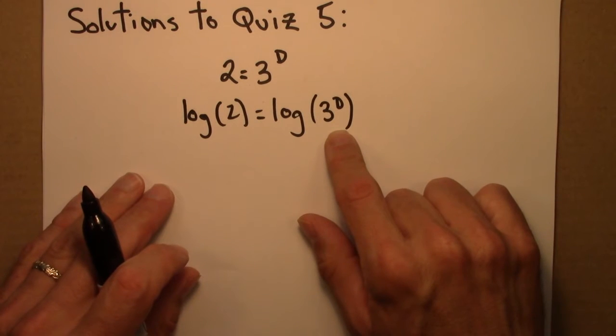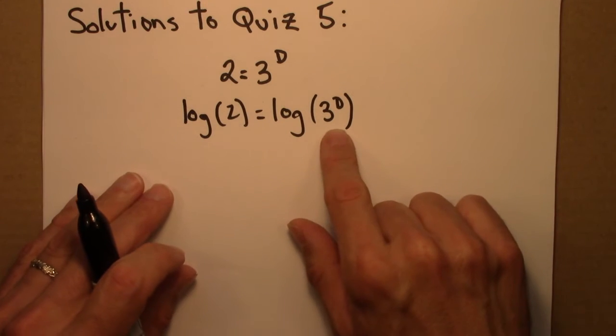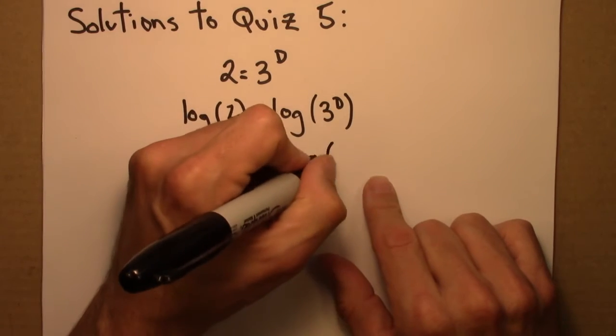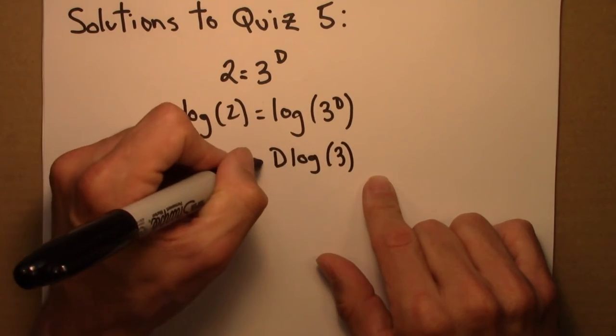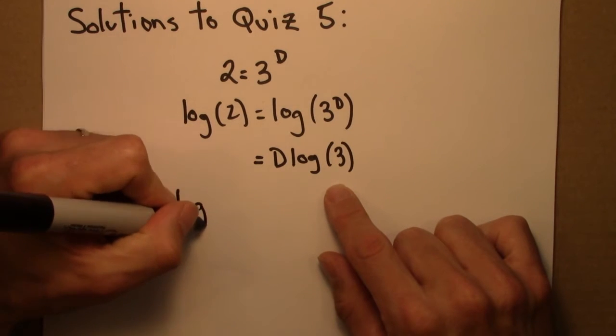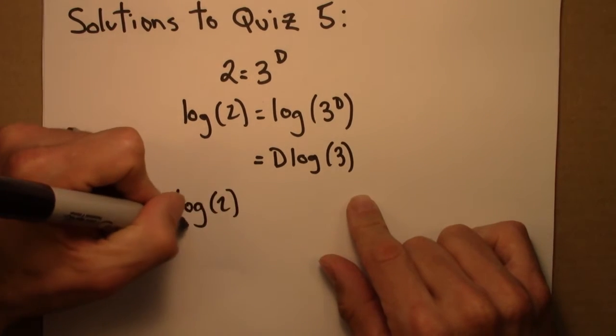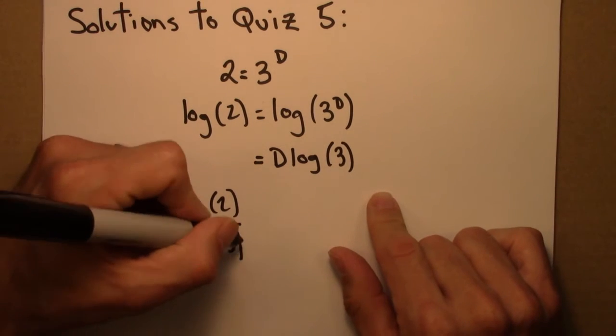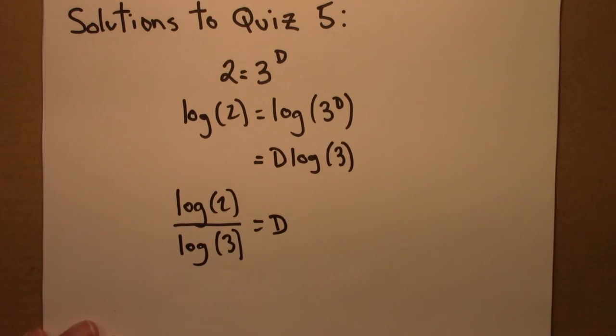Use the exponent property on the right, divide both sides of the equation by log 3, and that's our answer.